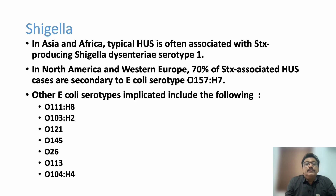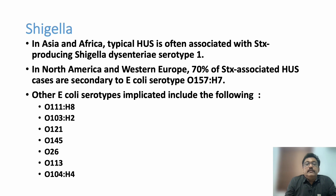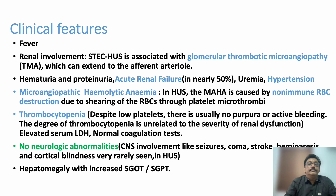Different Shiga serotypes can produce HUS; E. coli O157:H7 is the most important cause, but various other E. coli subgroups can also produce HUS. In the emergency room, HUS, TTP, DIC, and ITP all share some resemblance. Patients can present with fever, hematuria, proteinuria, and renal failure.